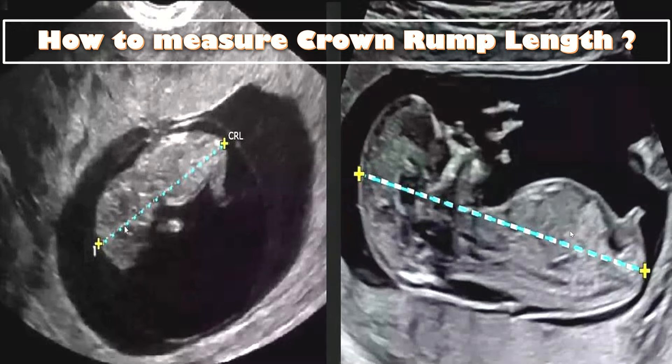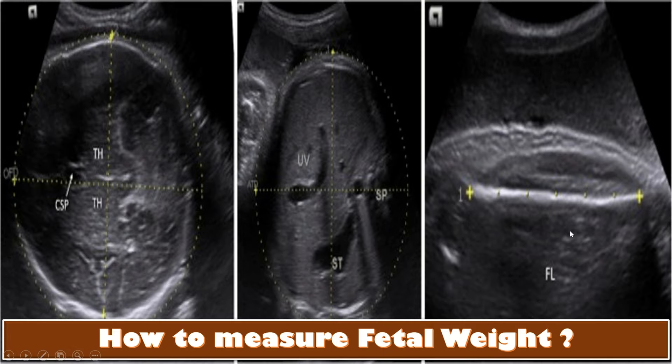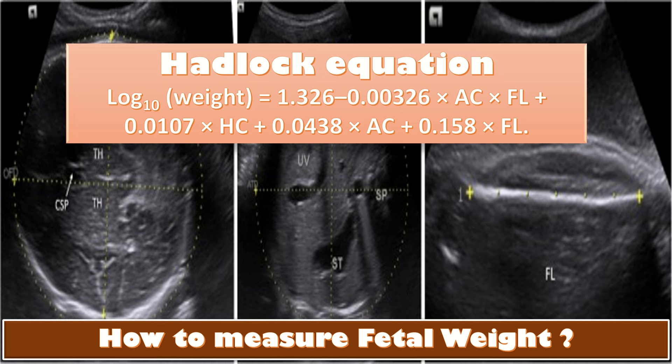How to measure the estimated fetal weight: the most used equation of estimated fetal weight worldwide is the three-parameter Hadlock equation, based on the head circumference, abdominal circumference, and femur length. The formula is: log of the weight equals 1.326 minus 0.00326 multiplied by abdominal circumference multiplied by femur length.